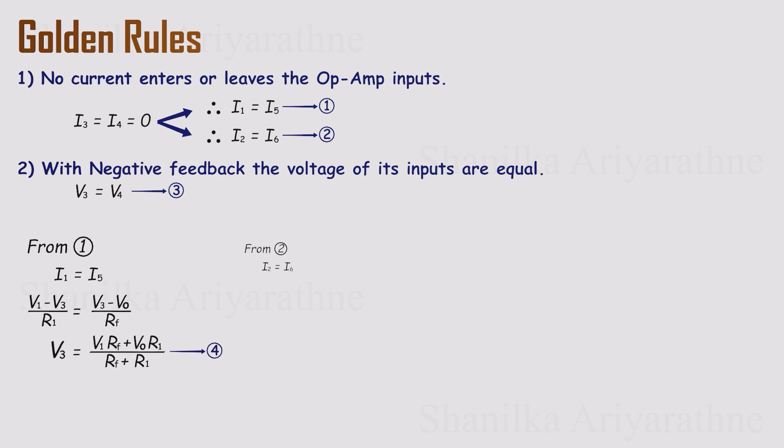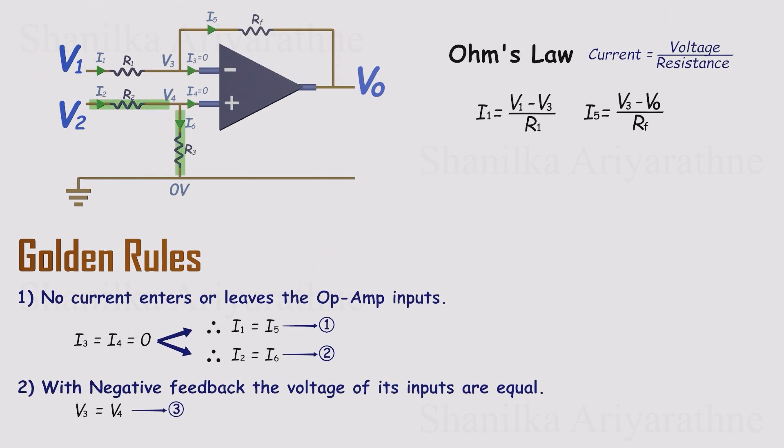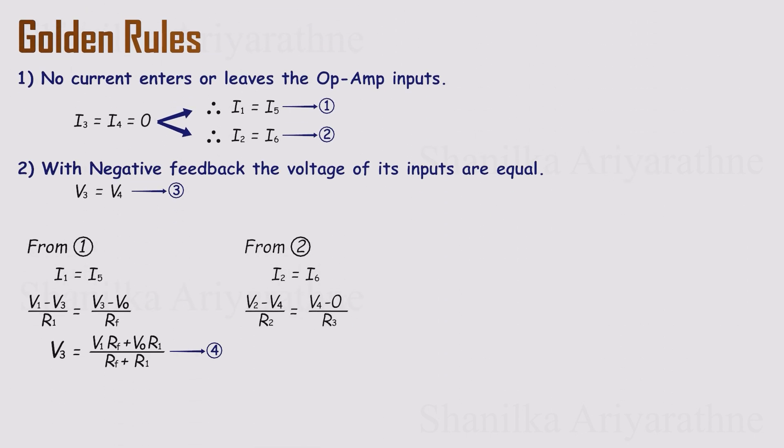Now, let's do the same for equation 2. I2 equals I6. Again, watch the resistors the currents flow through. I2 flows through R2, and I6 flows through R3 down to ground. Writing both currents with Ohm's law and substituting them back into the equation gives us an expression for V4, the voltage at the non-inverting input.